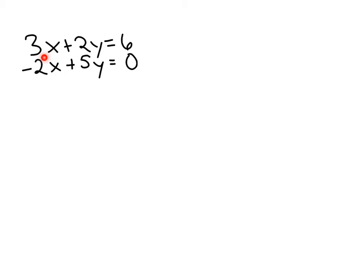We could eliminate the x's from this system of equations if we multiply the first equation by 2 and multiply the second equation by 3. That way our leading terms would be positive 6x and negative 6x, so when we add those equations the x terms would be eliminated. So that's what I'm going to do here.